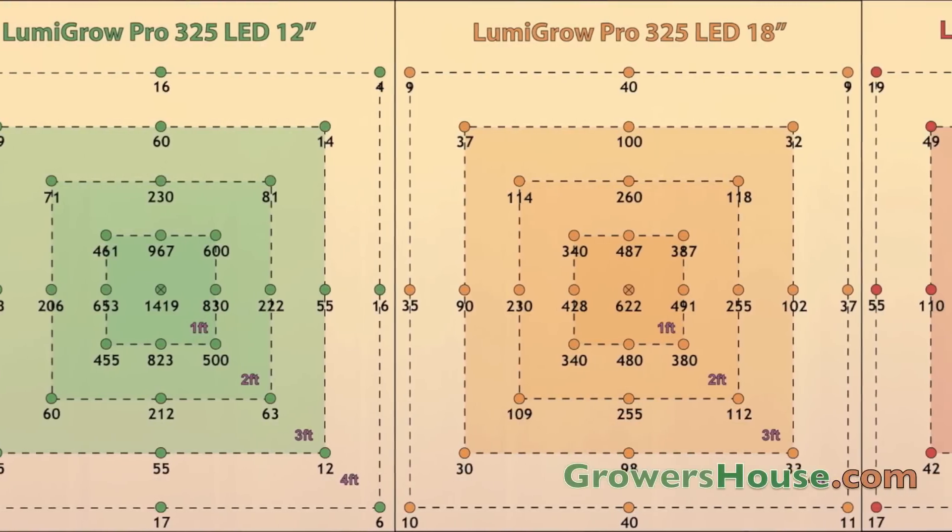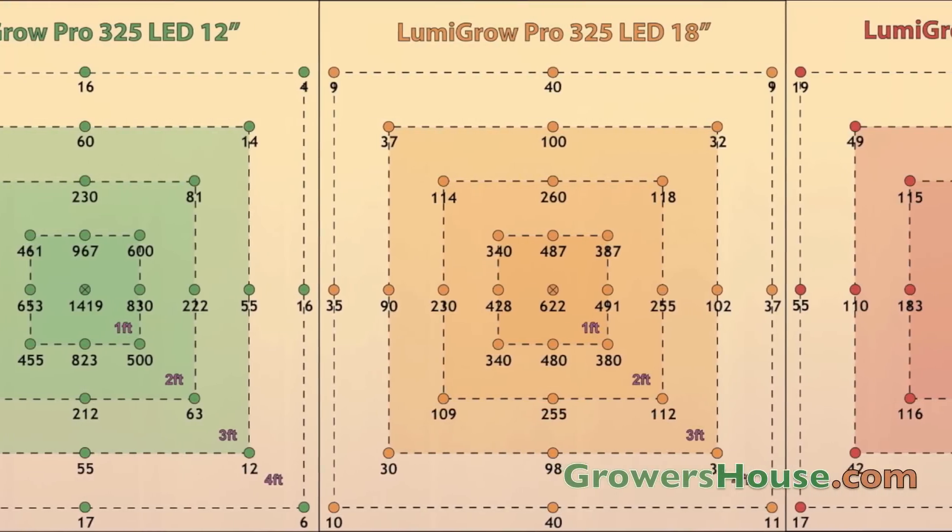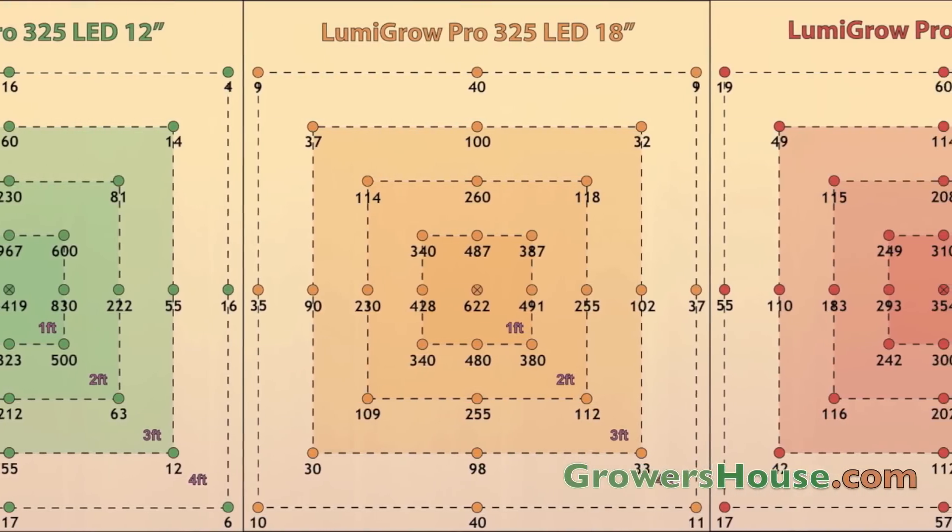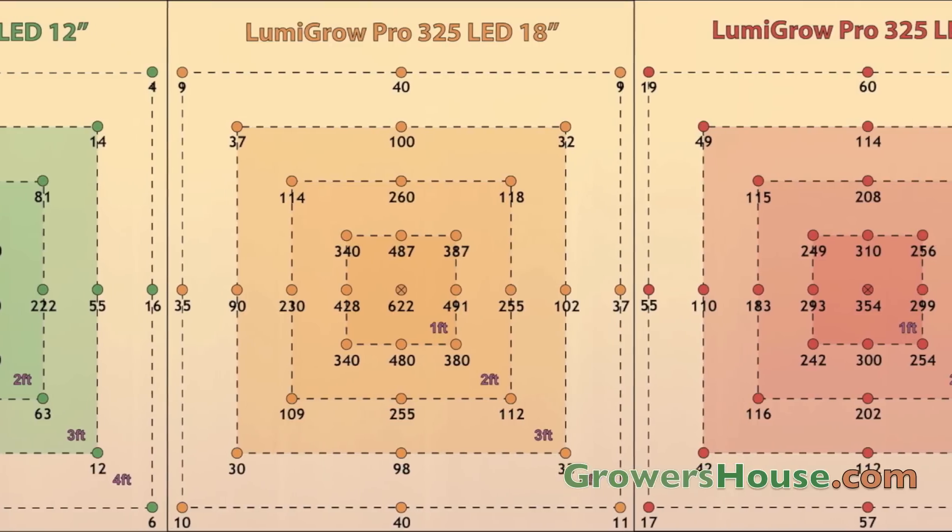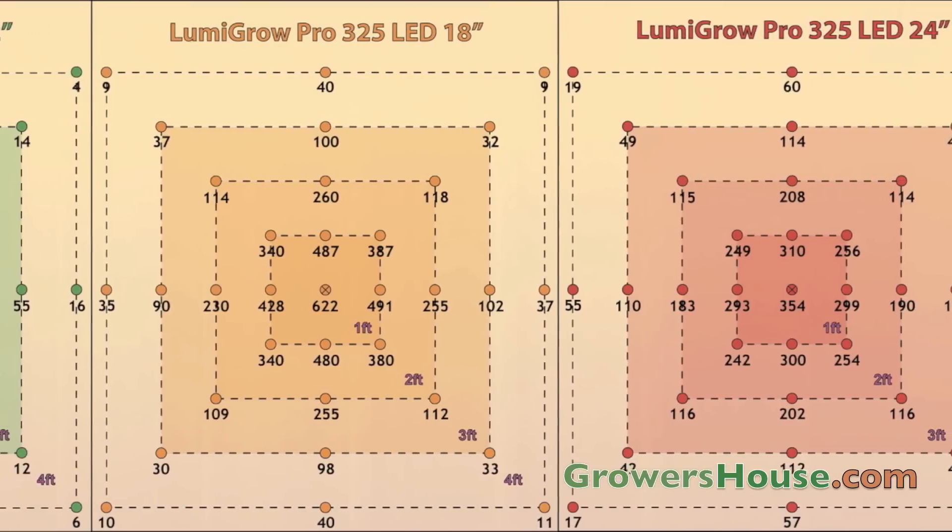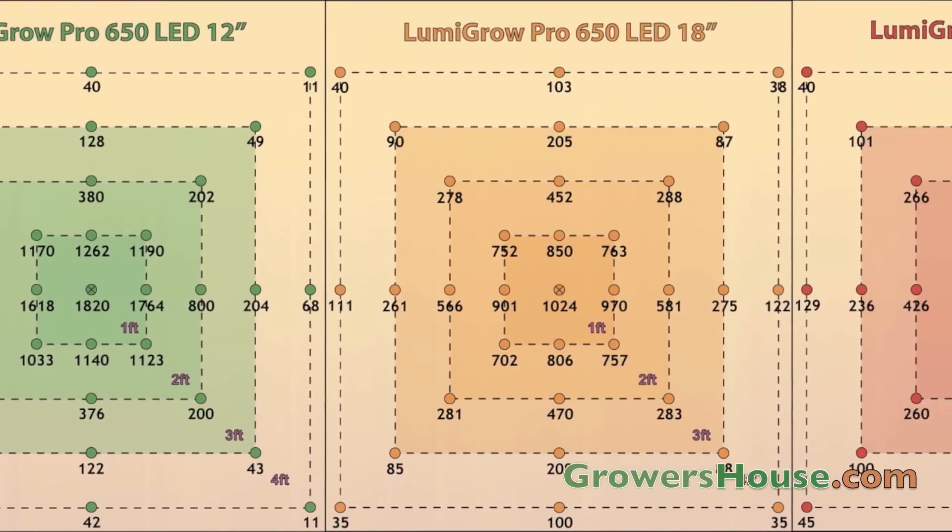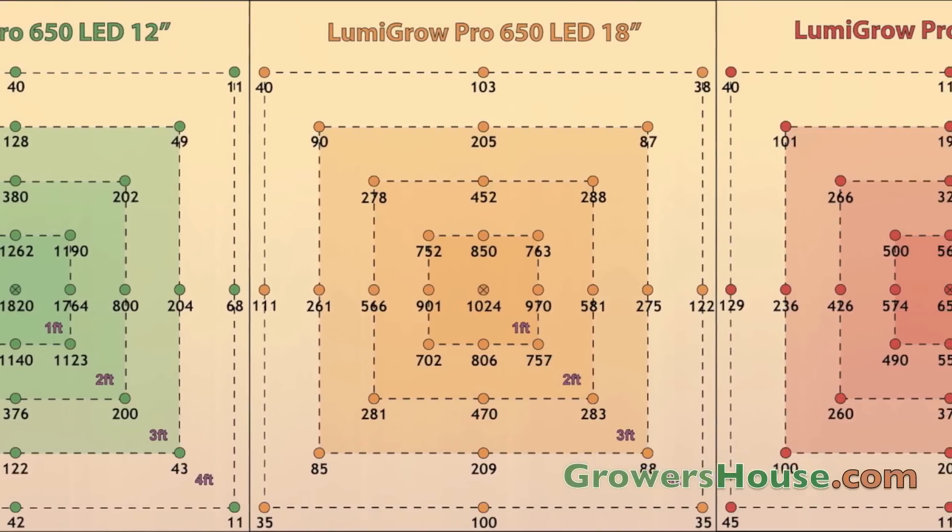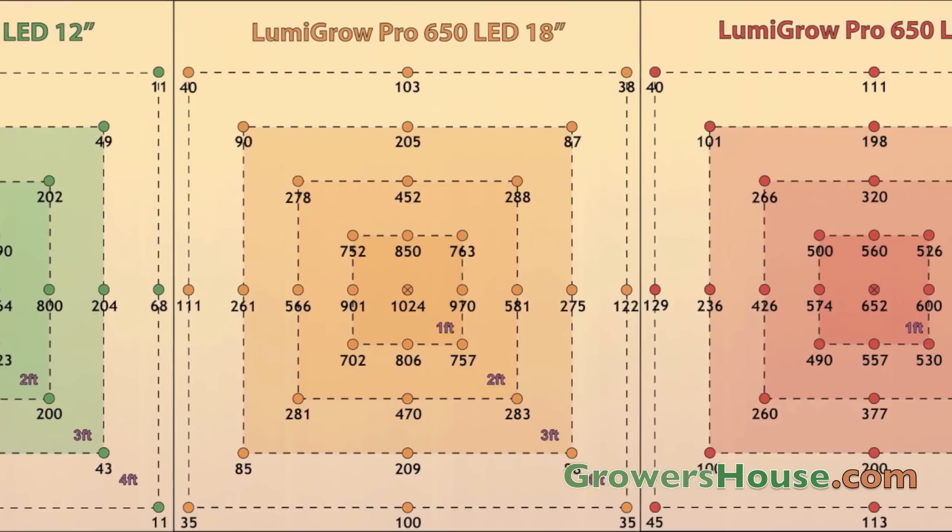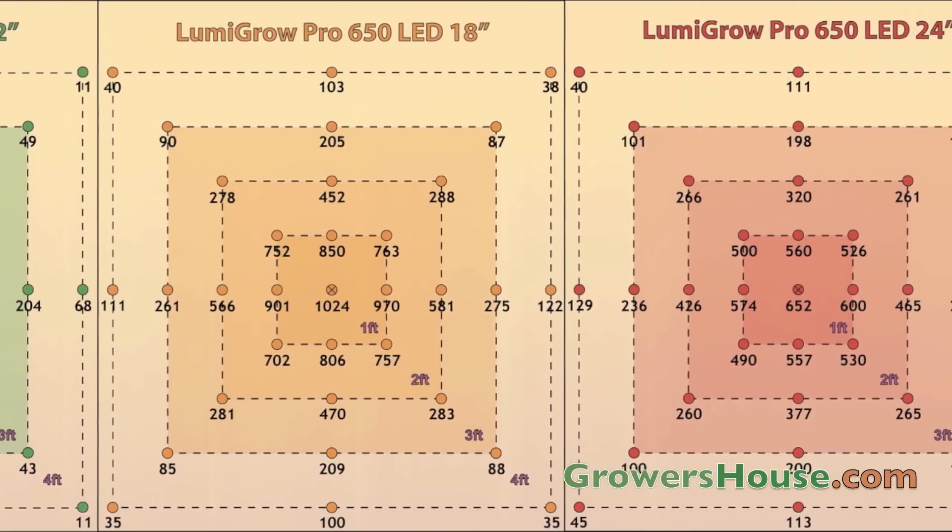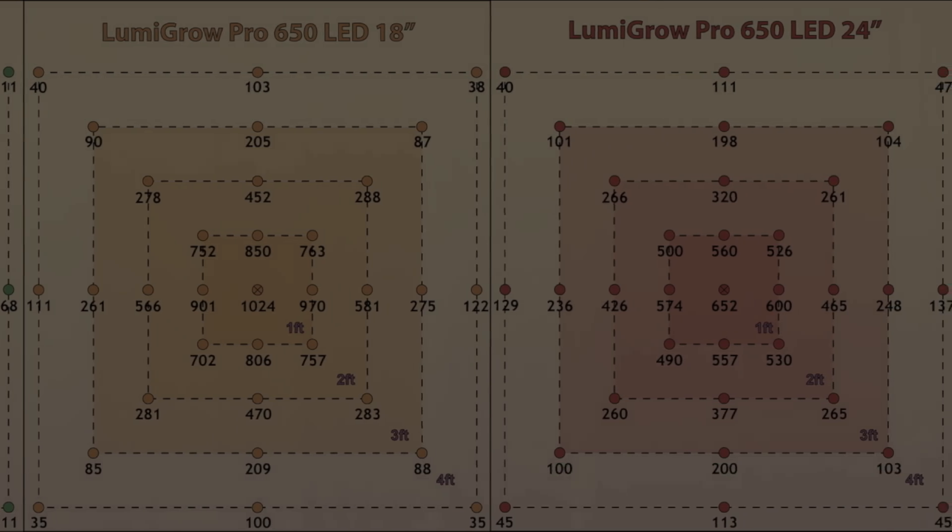Here we have our PAR readings over our four by four foot growth footprint at 12 inches, 18 inches, and 24 inches above that four by four for the 325 and the 650. We have these readings for these units and more units on our website, so be sure to click on the link below to go to our blog and see those readings. And here are some specs on the units.